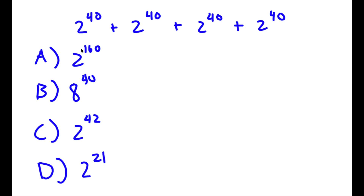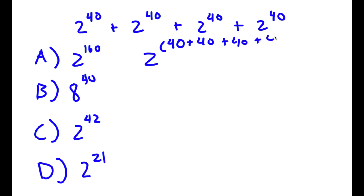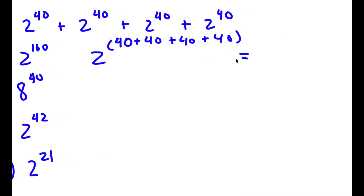Alright, let's go through all these answer choices. For A, how they got 2 to the power of 160 was: keep the base the same and simply add all the exponents. So you do 2 to the power of 40 plus 40 plus 40 plus 40. 40 plus 40 is 80, 80 plus 40 is 120, 120 plus 40 is 160, so you get 2 to the power of 160.